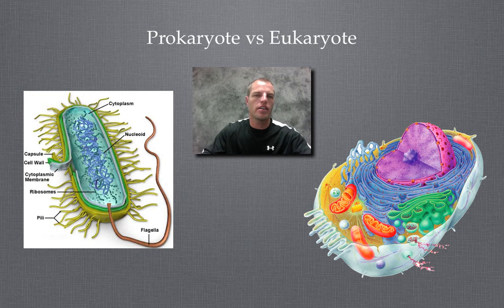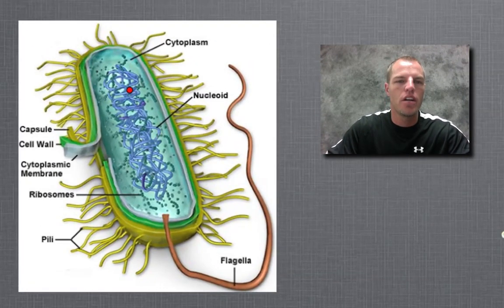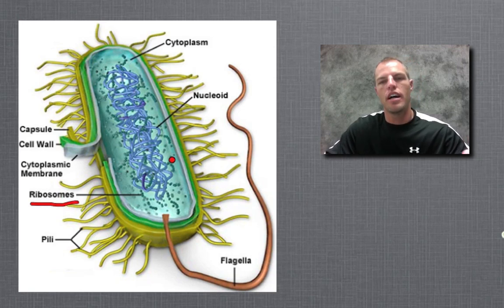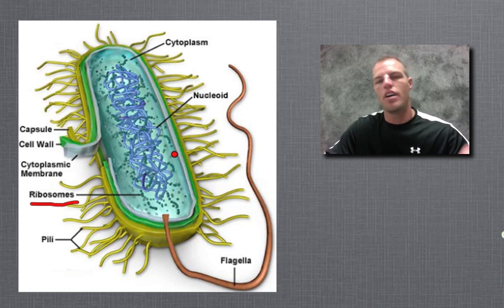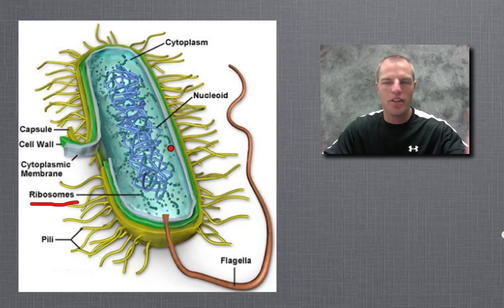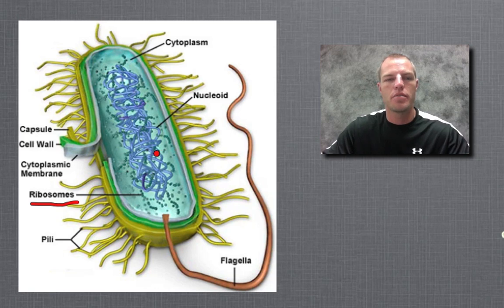If we look back at my prokaryote, which is my bacteria, it does have its DNA — not in a nucleus — and it has all these little green organelles. It doesn't have a whole lot of organelles, but it does have ribosomes. Ribosomes make proteins through a process of protein synthesis. Proteins are the building blocks for what an organism is, and it's the DNA that holds the code for what proteins are going to be made.